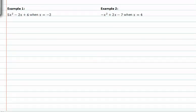In example one, we have 5x² - 2x + 6. This happens to be a trinomial. We are asked to replace x with -2 because x equals -2. So we need to evaluate this expression when x equals -2.